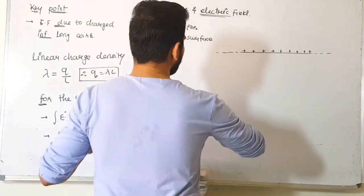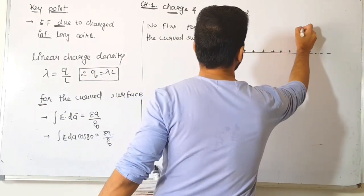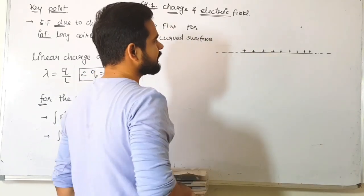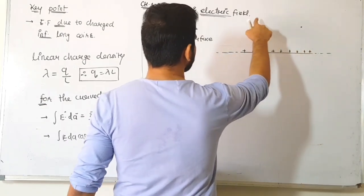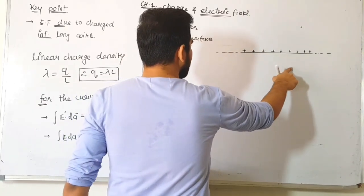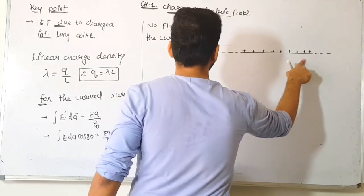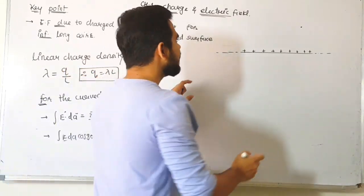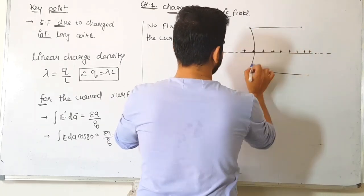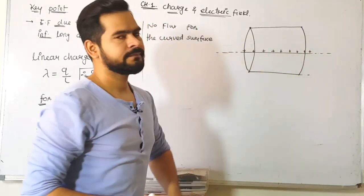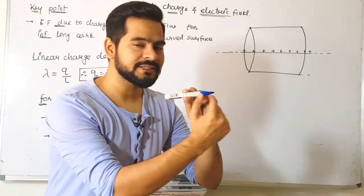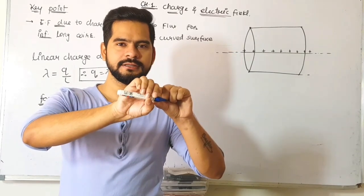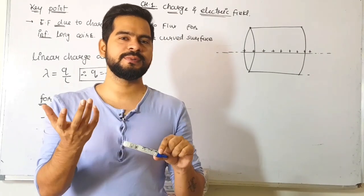But for application of Gauss's Law, we can imagine a closed Gaussian surface. If I go to a particular distance r from the wire, there's a point at distance r. Similarly, many points exist at the same distance r from the wire. If you join all these imaginary points, you get a cylindrical shape. The wire's portion is inside a closed cylinder—this is the Gaussian surface we imagine.